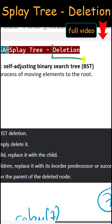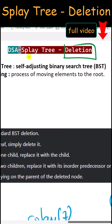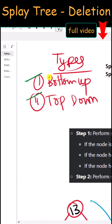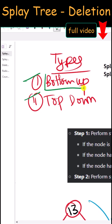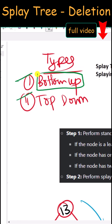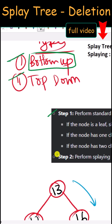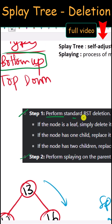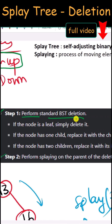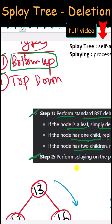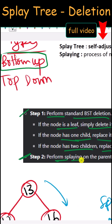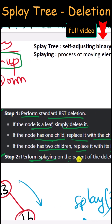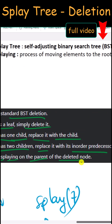Let's take a look at the deletion process in a splay tree. In this video we're going to talk about the bottom-up approach. There are two main steps. First, we perform the standard BST deletion, and then in step two we perform the splaying on the parent of the deleted node.